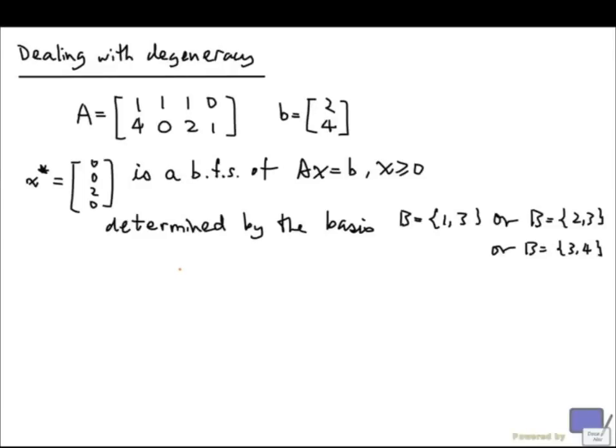Finally, we are going to deal with basic feasible solutions that do not have as many non-zero entries as there are elements in the basis that determine them. Such a solution is called degenerate. We'll first look at an example.